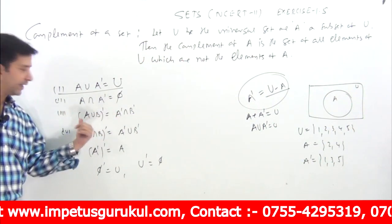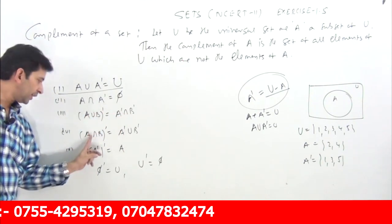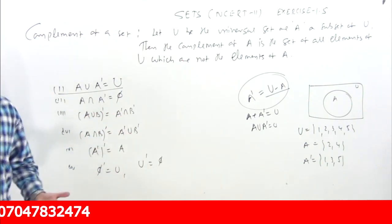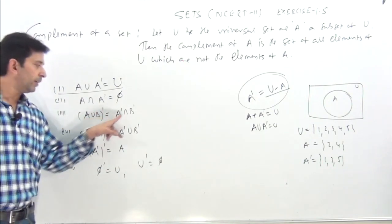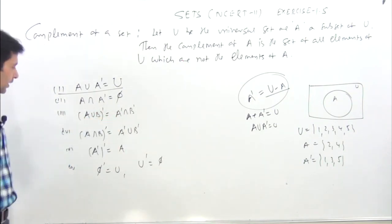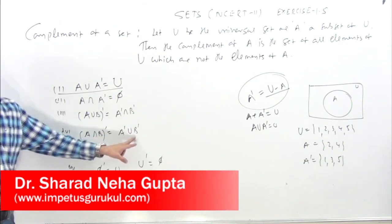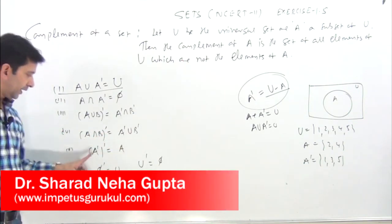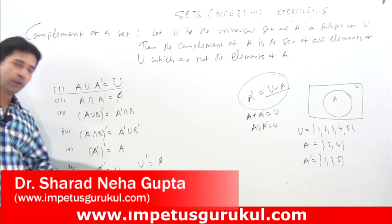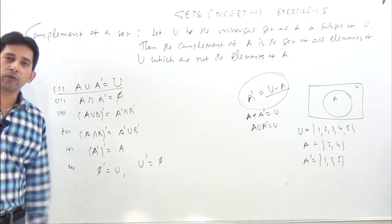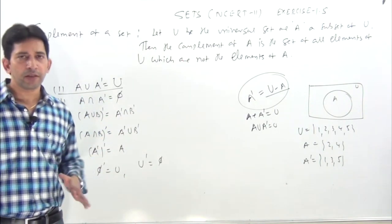A union B complement equals A complement intersection B complement — yeh De Morgan's law hai. Intersection union mein convert hota hai, intersection union mein. A union B complement equals A complement intersection B complement. A intersection B complement equals A complement union B complement. A complement ka complement equals A. Empty set ka complement equals universal set, universal set ka complement equals empty set.